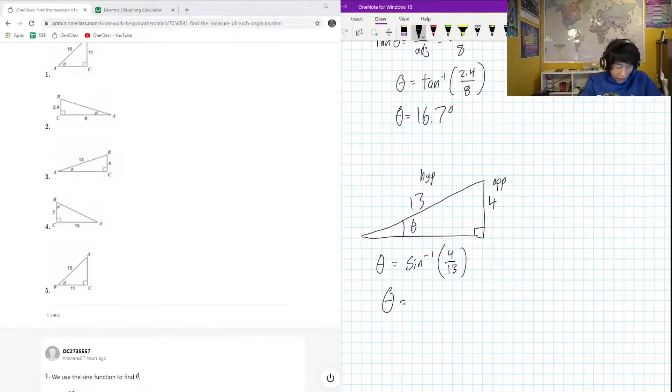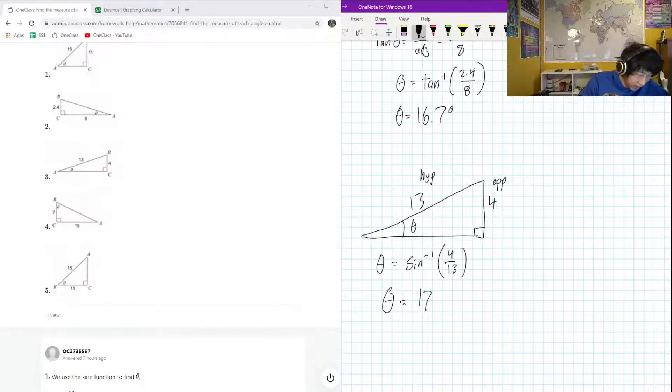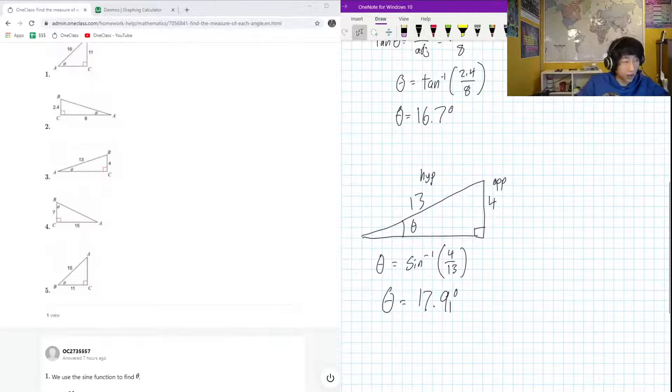Let's find this out: inverse sine 4 divided by 13. My answer was 17.9 degrees. Fair, nice and straightforward - 17.9, hopefully we got the same thing here, awesome.